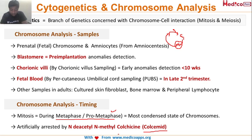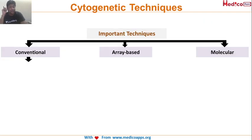So to summarize: chromosomal analysis is done at metaphase because chromosomes are most condensed there. We achieve this by artificially arresting the cell in metaphase using colcemid. These are very important one-liners for exams. Any doubts can be put in the comment section.